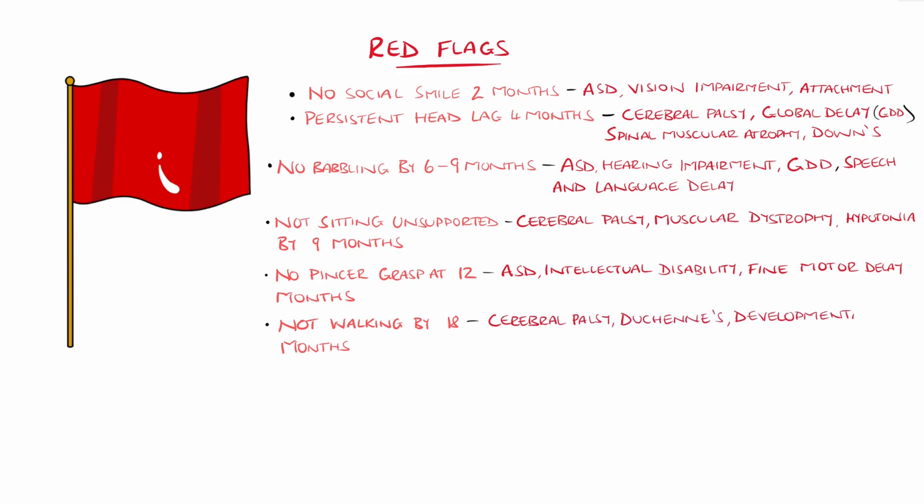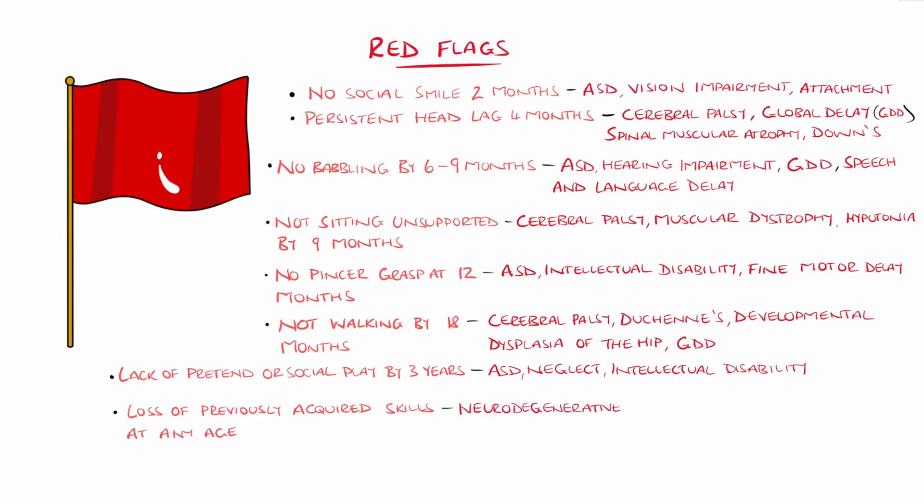developmental dysplasia of the hip, or global developmental delay. Lack of pretend or social play by three years can be a sign of ASD, intellectual disability, and neglect. Loss of previously acquired skills at any age may be a manifestation of neurodegenerative disorders like Rett syndrome or leukodystrophies, ASD once again, epileptic encephalopathy, or even brain tumor or injury.